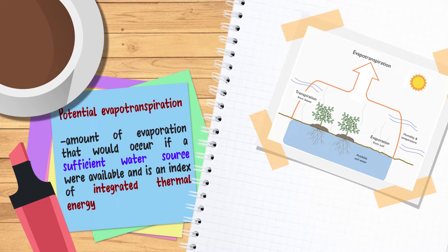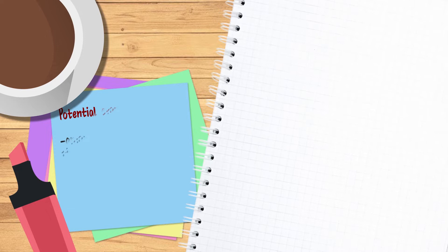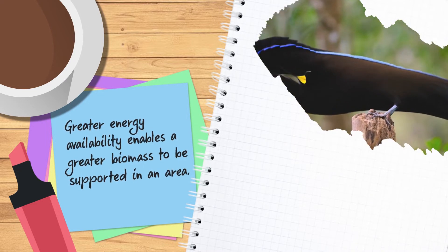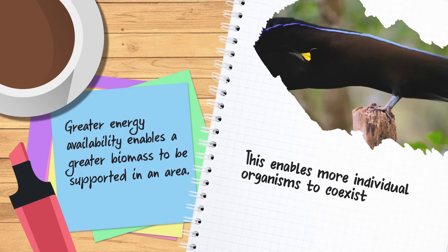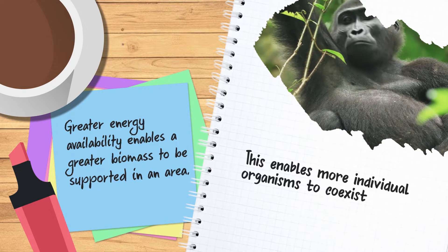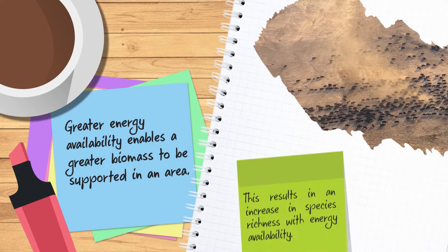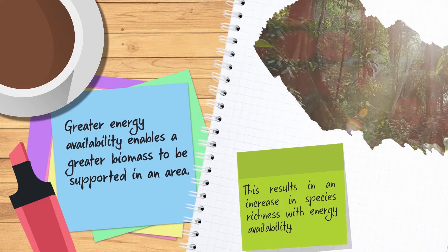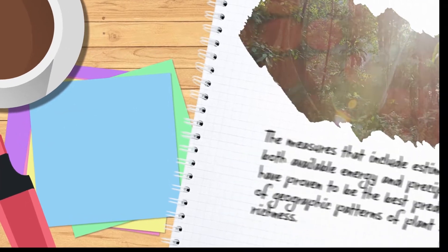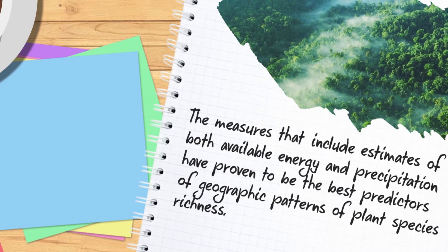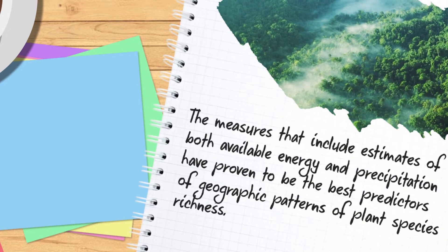Potential evapotranspiration is the amount of evaporation that would occur if sufficient water were available, and is an index of integrated thermal energy. Greater energy availability enables a greater biomass to be supported in an area. In turn, this enables more individual organisms to co-exist and thus more species at abundances which enable them to maintain viable populations, resulting in an increase in species richness with energy availability. Measures that include estimates of both available energy and precipitation have proven to be the best predictors of geographic patterns of plant species richness.